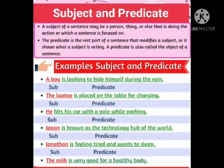Next: 'Jonathan is feeling tired and wants to sleep.' Who is feeling tired and wants to sleep? Jonathan. So Jonathan is the subject, and 'is feeling tired and wants to sleep' is the predicate. Next: 'The milk is very good for a healthy body.' What is good for a healthy body? The milk. We are talking about milk, so the milk is the subject, and 'is very good for a healthy body' is the predicate.